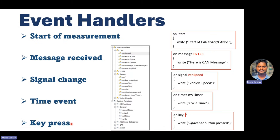Now, what are the event handlers? There are different event handlers — this picture is taken from the actual CAPL browser. You can see: CAPL event, CAN event, J1939 system events, on key, pre-start, pre-stop, start, and stop measurement. Out of all of these, five are most commonly used and very important.